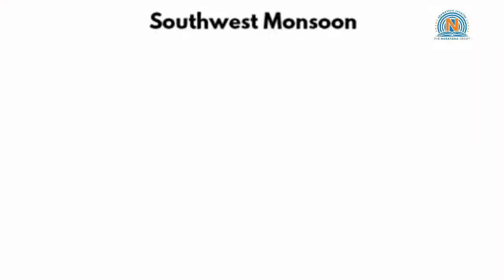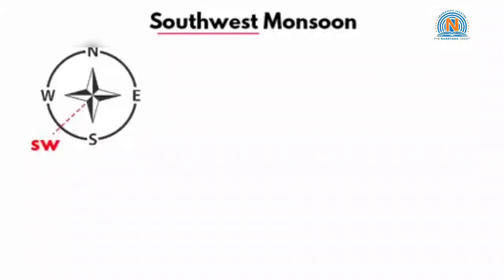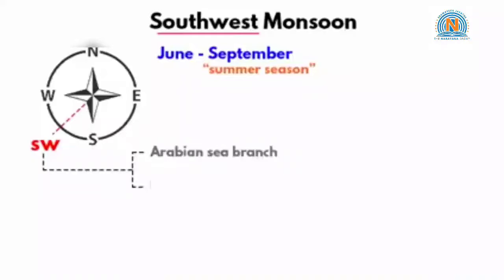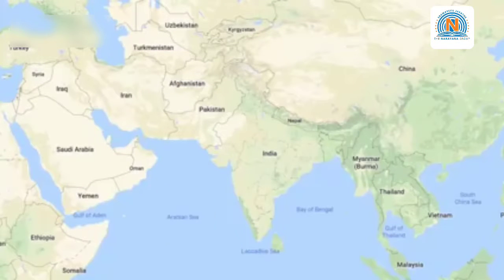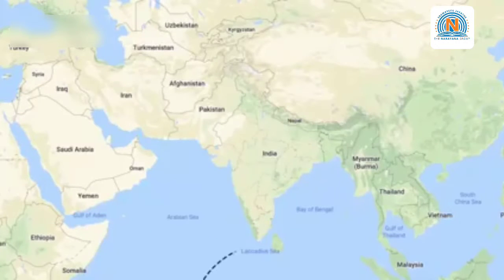This video is on southwest monsoon. From the words you can figure out that the monsoon winds arrive from the southwestern direction of the Indian subcontinent. It primarily affects the Indian subcontinent, and is known as the oldest and most anticipated weather phenomenon in India, occurring every year from June to September. The southwest monsoon arrives on the Indian landmass in two branches: through the Arabian Sea branch and through the Bay of Bengal branch. The Arabian Sea side first hits the western ghats of Kerala.